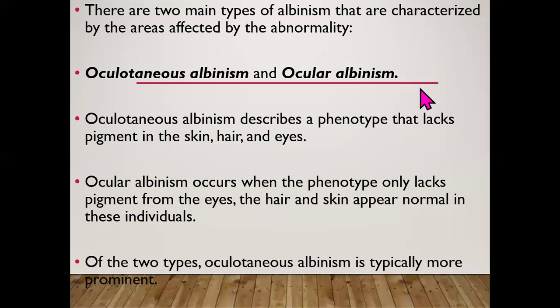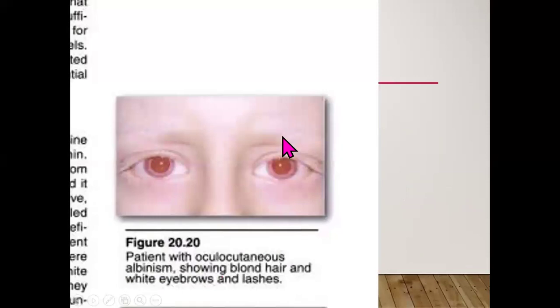There are two main types of albinism. In oculocutaneous albinism, people lack pigment in the skin, hair, and eyes. In ocular albinism, they only lack pigment from the eyes while skin and hair appear normal. Oculocutaneous albinism is typically more prominent. Affected patients may present with blonde hair and white eyebrows and lashes.